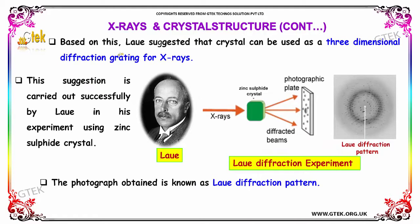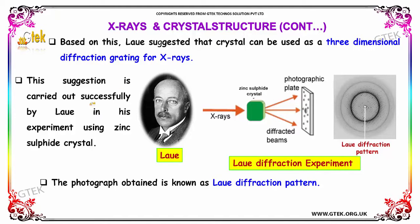Based on this, the great scientist suggested that the crystal can be used as a three-dimensional diffraction grating for X-rays. You are able to see the X-rays passing and placed on the zinc sulfide crystal, and you can see the diffracted beams. This suggestion was successfully carried out by Laue in his experiment using zinc sulfide crystal, and the photograph obtained is known as the Laue Diffraction Pattern.